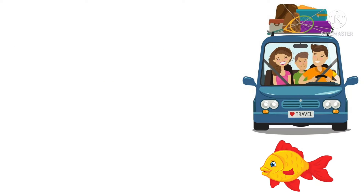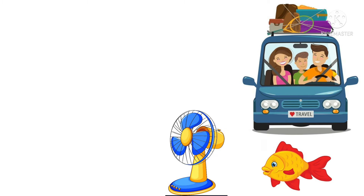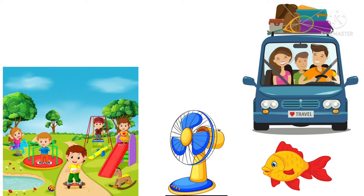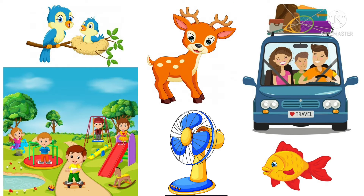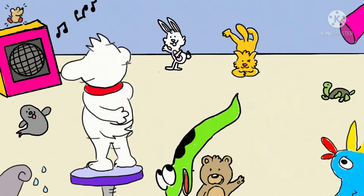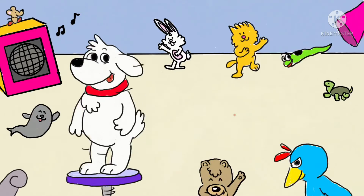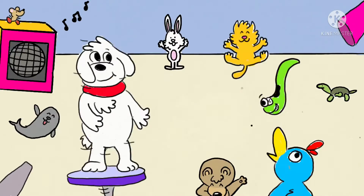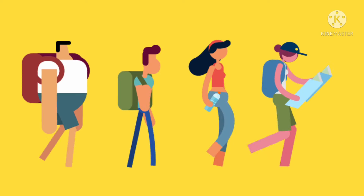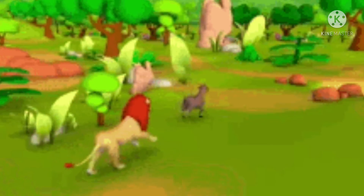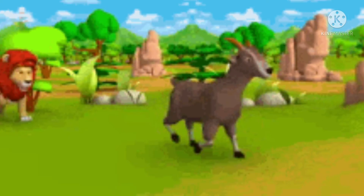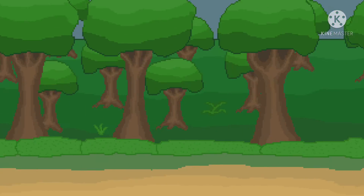We see many things around us. Some are living things while some are non-living things. Things that have life are living things, like human beings, animals and plants.